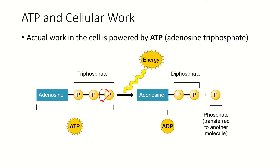When the cell moves around, when the cell changes shape, when things move within the cell, when something moves by active transport across a membrane — all of these things are going to require energy. And the most common form of energy is ATP, which means that we break that bond.